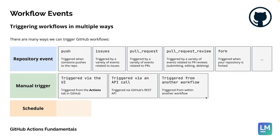The final group is the schedule. We can actually run a workflow as a cron job, as long as we specify the schedule as a cron expression. This enables us to run the workflow automatically without having to go to the UI, trigger it via an API call, or trigger it from within another workflow.